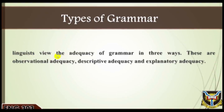Adequacy of grammar: The major business that linguists have with the study of language is to provide explanations of the grammar of a language based on their observations. The attempt is to present an account of the language that is acceptable to the native speakers. This is in accordance with Chomsky's (1965: 4-5) idea that a fully adequate grammar must assign to each of an infinite range of sentences a structural description indicating how that sentence is understood by the ideal speaker-hearer.